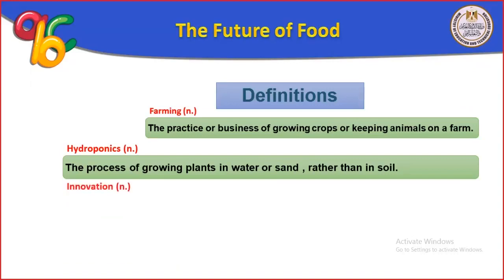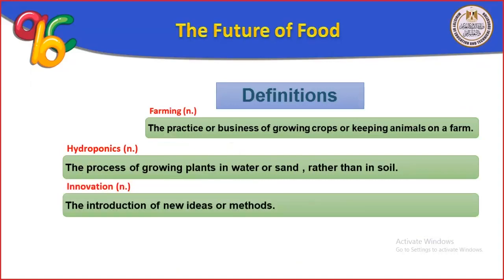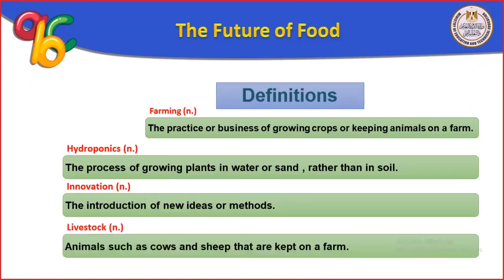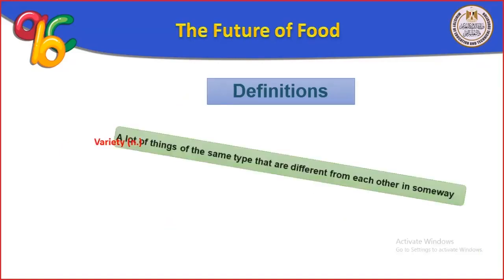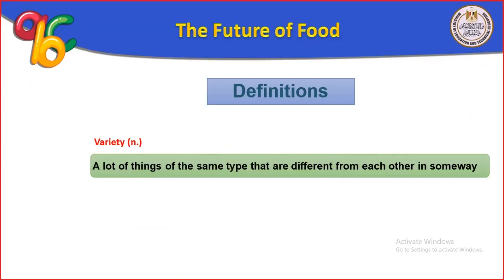Innovation is the introduction of new ideas or methods. Livestock are animals such as cows and sheep that are kept on a farm — الحيوانات اللي بنربيها زي البقر أو الخرفان. Variety means a lot of things of the same type that are different from each other in some way.